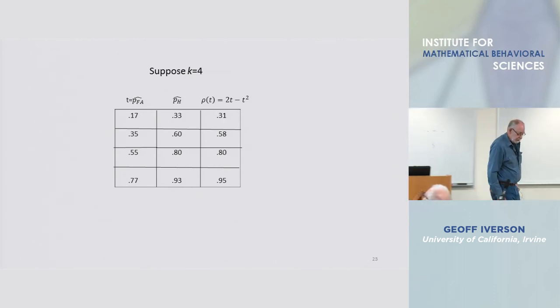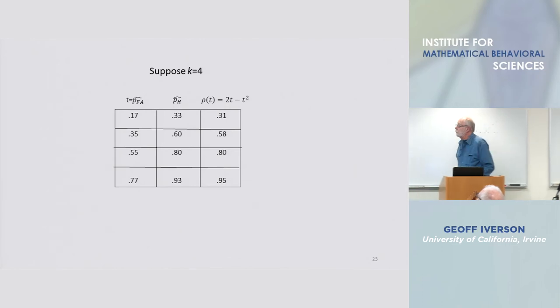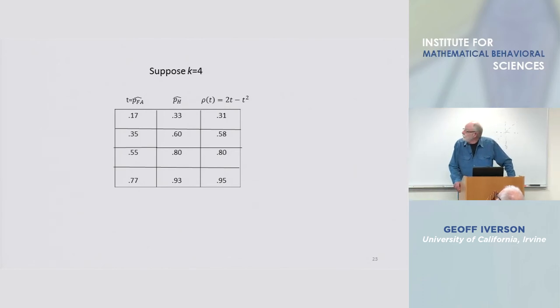With k equals 10 you would recover, you'd have 10 points, but they would trace out the function rho very very well. The approximation is actually very good.